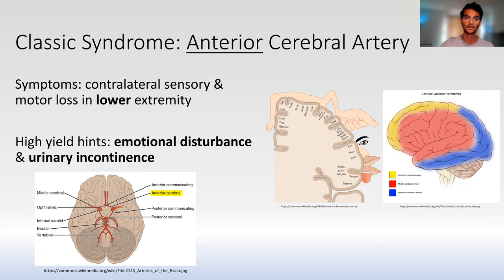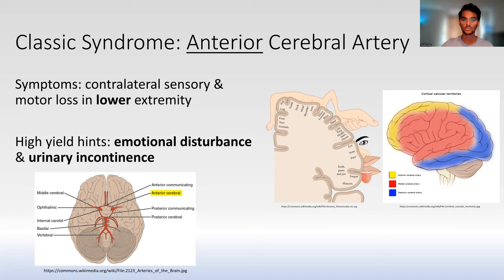For extra hints: sometimes questions are a little vague, so keep these high-yield clues in mind. You can also see emotional disturbances — the frontal cortex loses its ability to control emotions. And urinary incontinence is particularly high yield, because the frontal micturition center is located in this region. So in addition to lower extremity symptoms, you can also have loss of urine. If you see those things in a stroke question, remember anterior cerebral artery.